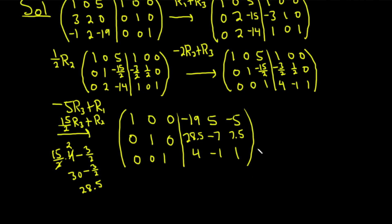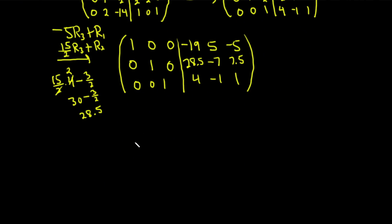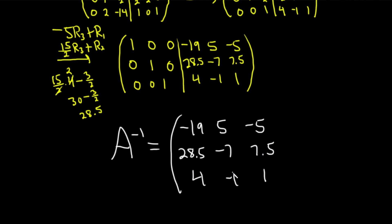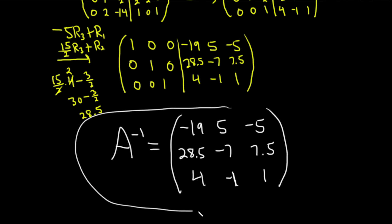So the answer is what you see on the right. A inverse equals the matrix with entries: negative 19, 5, negative 5 in the first row; 28.5, negative 7, and 7.5 in the second row; and 4, negative 1, and 1 in the third row. And that, my friends, is the inverse of this 3x3 matrix.